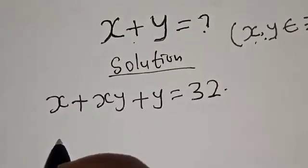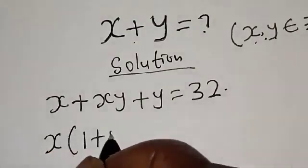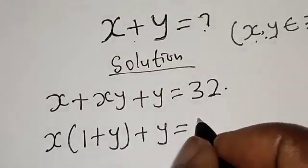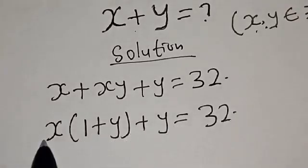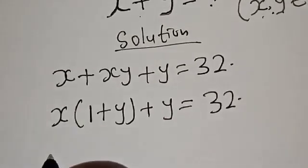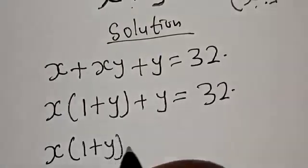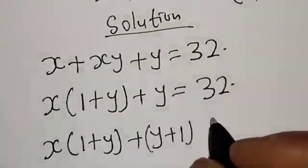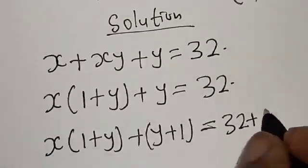Let's factor x out. We have x times (1 plus y) plus y is equal to 32. Now here we have (1 plus y) and here is y, with x outside. Then we can add 1 to both sides: x times (1 plus y) plus y plus 1 is equal to 32 plus 1.